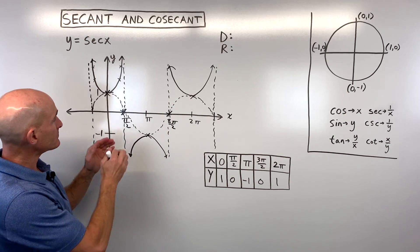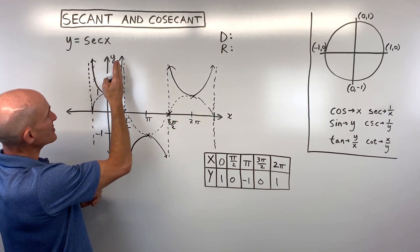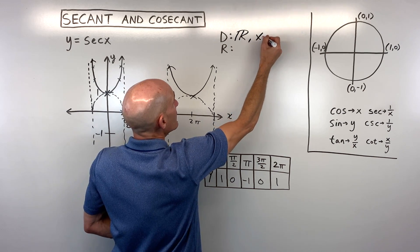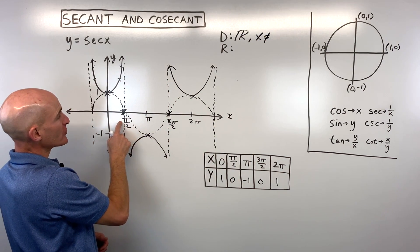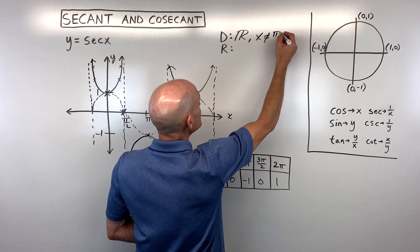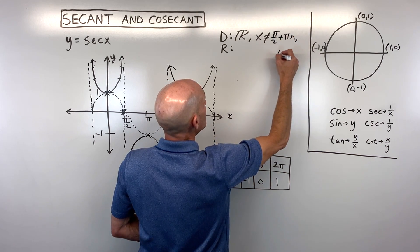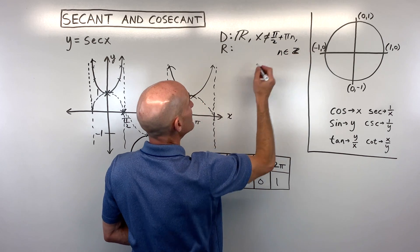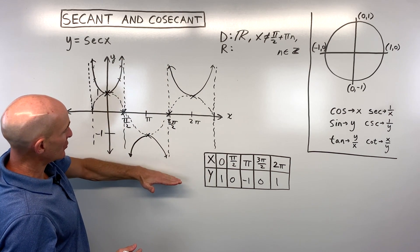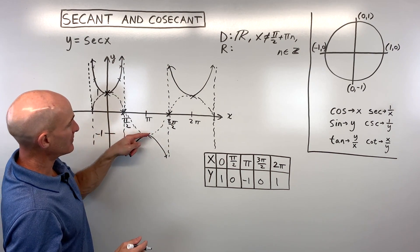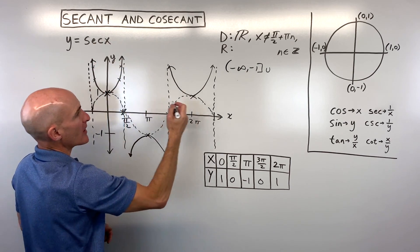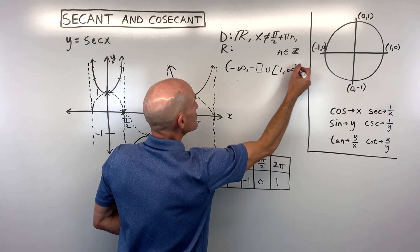Let's talk about the domain and range. The domain is all real numbers, except where the vertical asymptotes are. So x cannot be π/2 plus πn, where n is an element of the set of integers. The range: the y-values go from negative infinity up to −1 (including −1), then jump up to positive 1 and greater — so union from 1 to positive infinity.